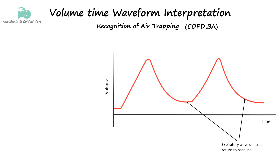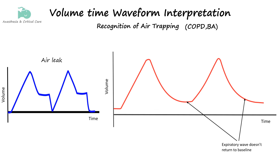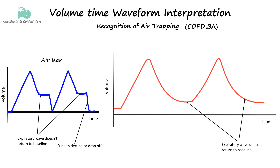Both air leak and air trapping cause the curve to not return to baseline, but for different reasons. In an air leak, the curve fails to return to baseline because air is escaping from the system, leading to a loss of volume — this can cause a rapid decline or sudden drop-off in the curve depending on the severity of the leak. In air trapping, the problem is incomplete exhalation, leading to residual air in the lungs; the curve flattens out as it approaches baseline but doesn't reach it. While both conditions result in a similar-looking waveform, the subtle differences in how the curve behaves can help differentiate between the two.